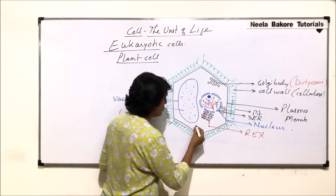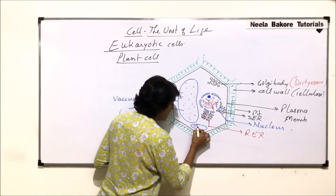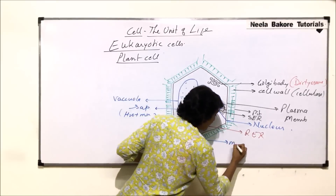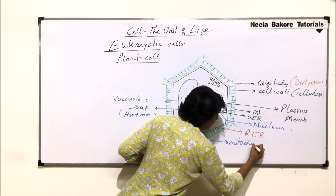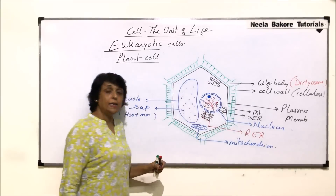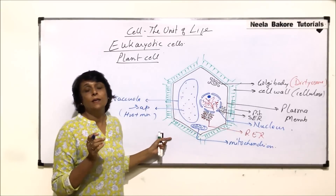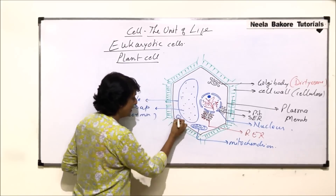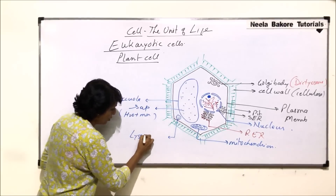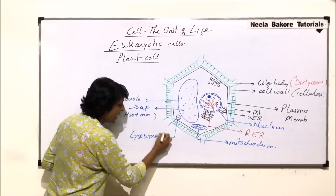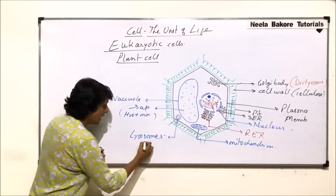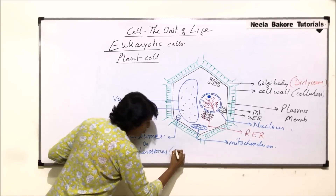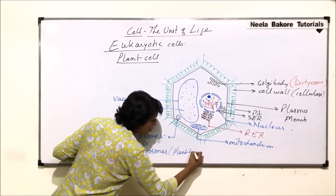Mitochondria are common to both cells. The inner membrane is thrown into folds and the outer membrane is smooth. In the animal cell we drew many lysosomes, but in the plant cell the number of lysosomes is comparatively less. In plants, lysosomes are also known as spherosomes.